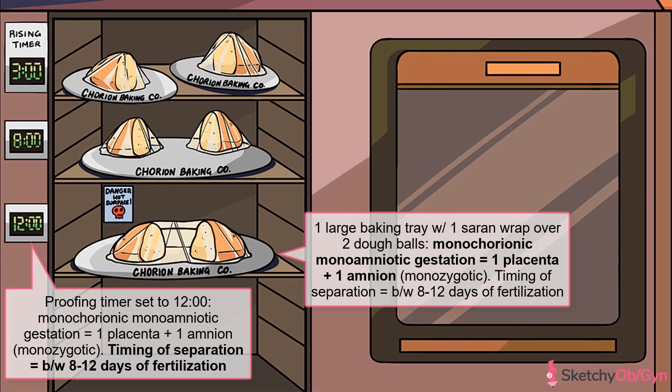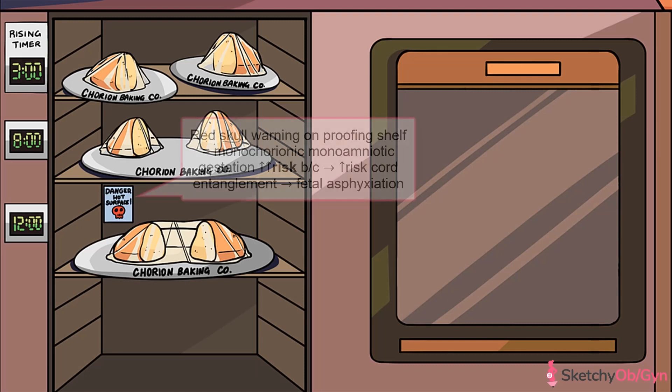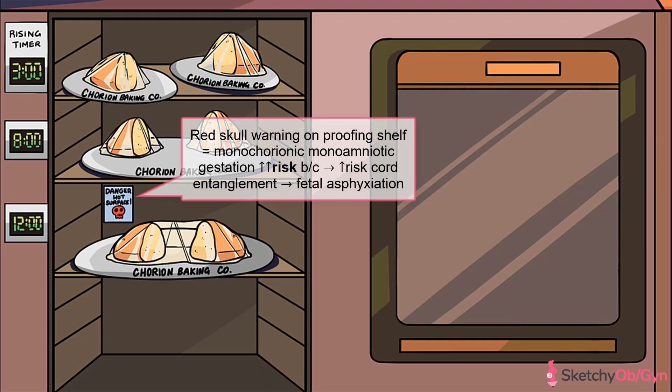Monochorionic-monoamniotic pregnancies occur when division happens between eight and twelve days after fertilization. These fetuses have to learn how to share early — they share both a placenta and an amniotic sac, just like these buns on the third shelf. Mono-mono twins have a much higher mortality rate due to the risk of umbilical cord entanglement between fetuses, since there's no amniotic membrane separating the two. That's why there's a red warning sign on this proofing shelf.